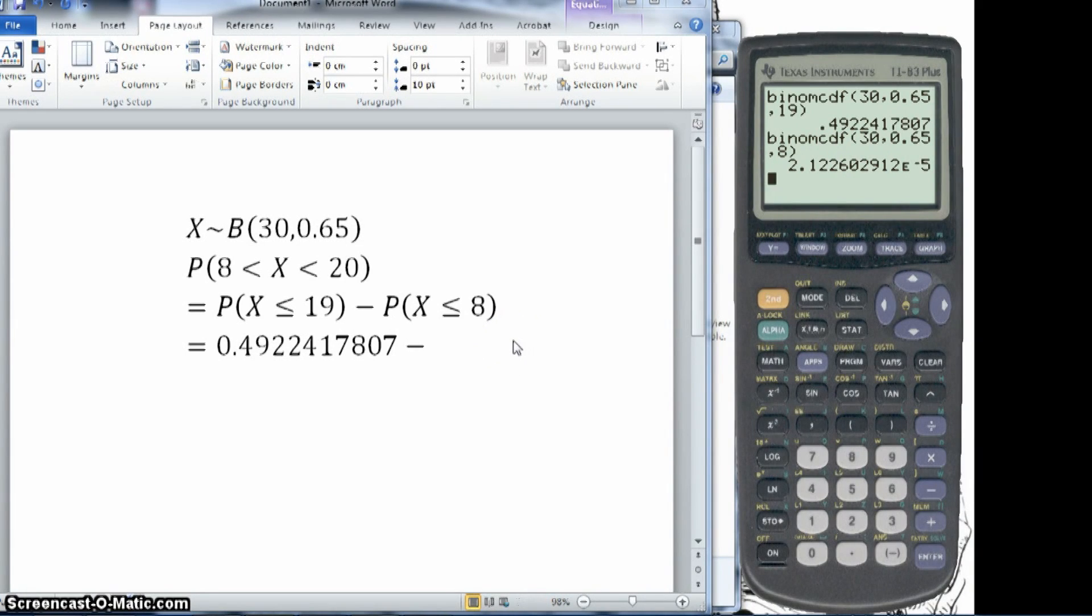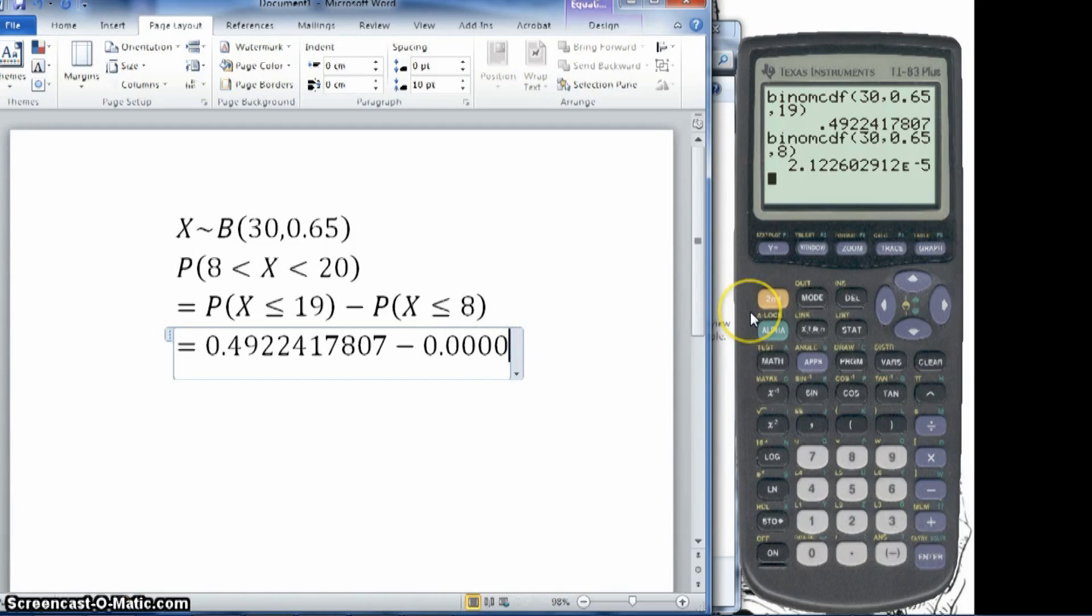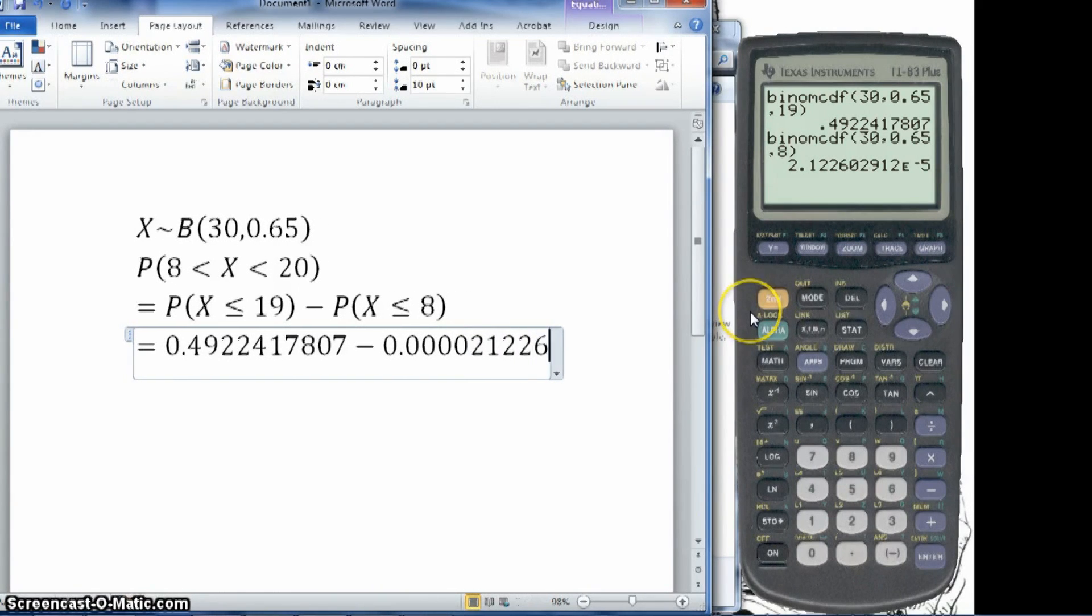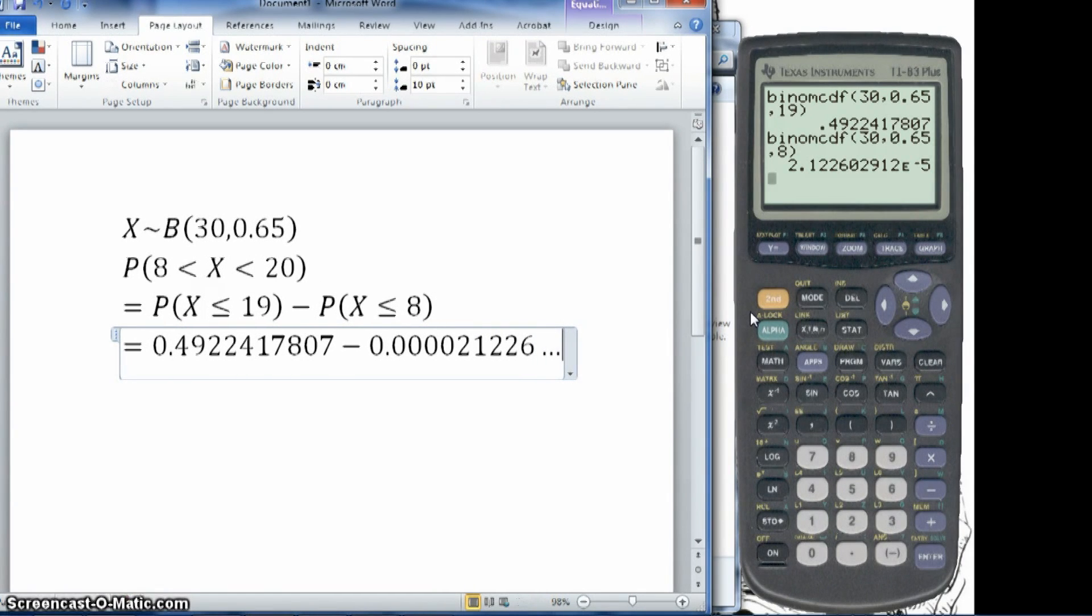And that gets me this value here. So 2.122602912 times 10 to the power of minus 5. So that would be 0.0000002122602912.